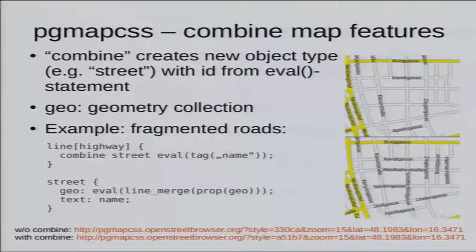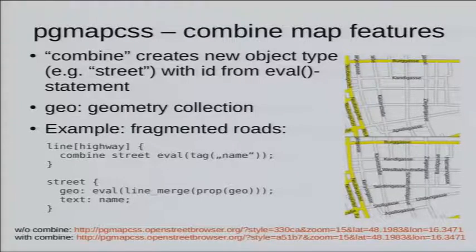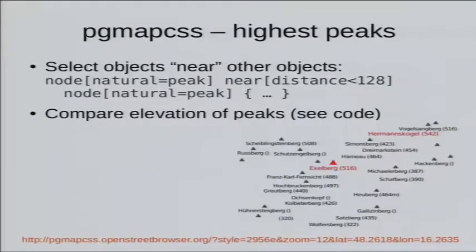I can also combine map features. As you all know, roads are separated into small segments according to changing layout — like if it's one-way or both ways, or a tramway or bus route goes on it. These parts are often very short and names don't get rendered on them. With this simplified style, I can connect all these segments and put the name on the resulting longer lines. As you can see in the image, much more roads get a name due to that.